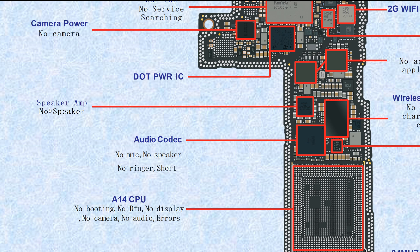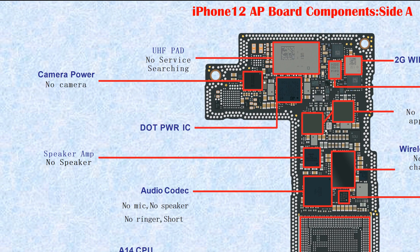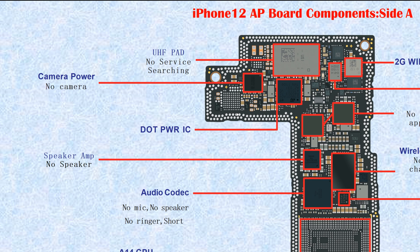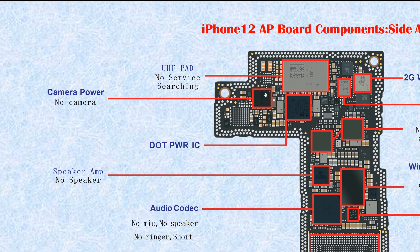This one is the dark power IC — the power IC for the dot projector. If broken, it causes no Face ID. This one is the camera power IC. If broken, it causes no camera, no photo.